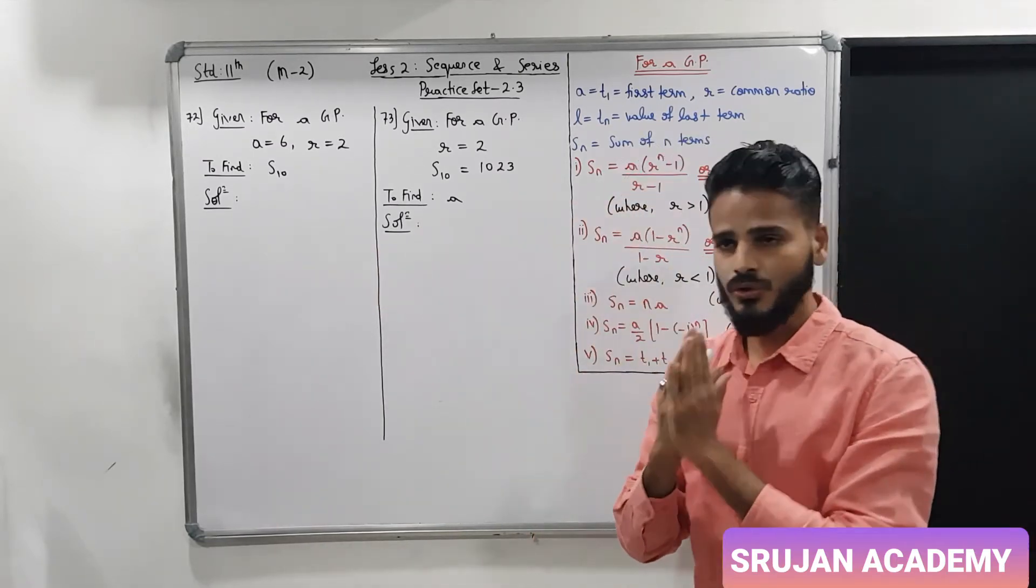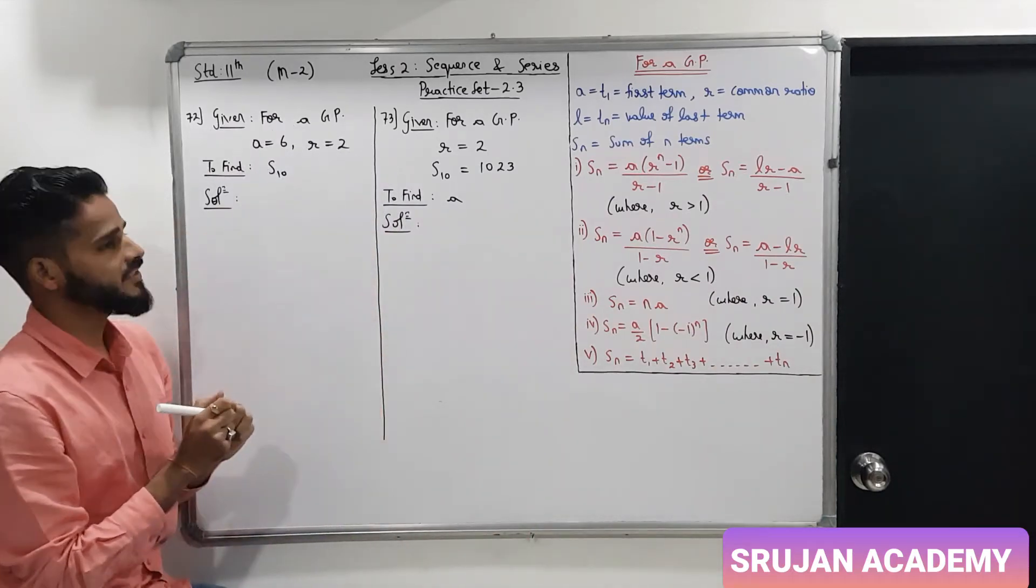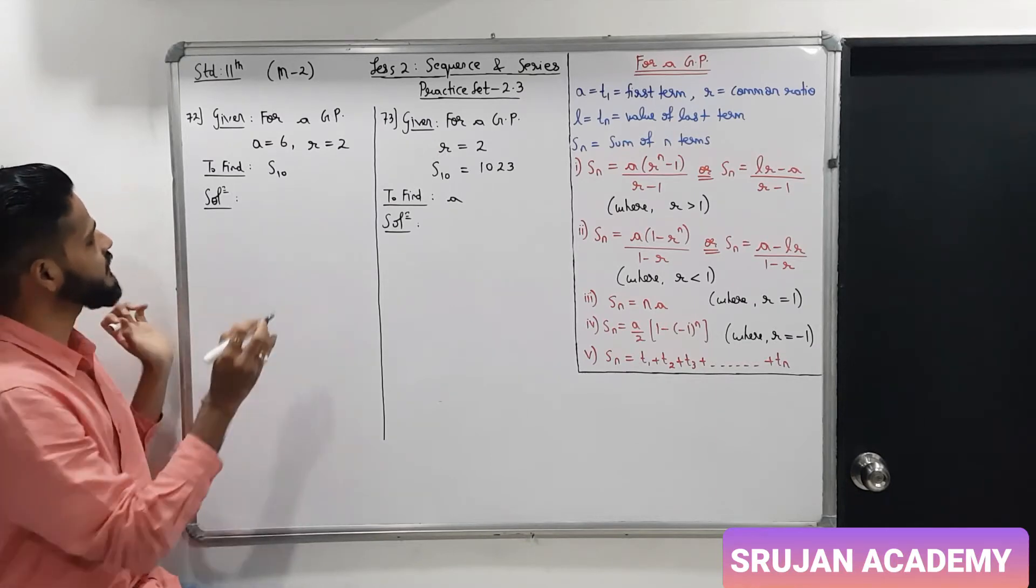Now see, continuing with the sum number 72, for a GP, a is equal to 6, common ratio R is 2, find S10.